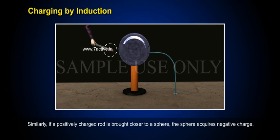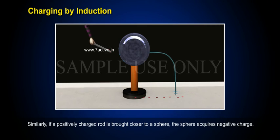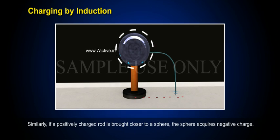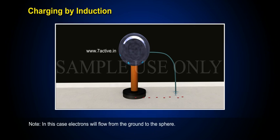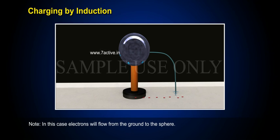Similarly, if a positively charged rod is brought closer to the sphere, the sphere acquires a negative charge. Note: in this case, electrons will flow from the ground to the sphere.